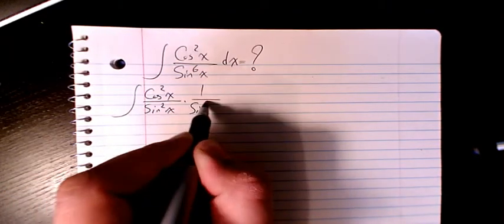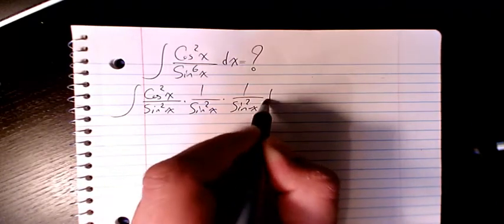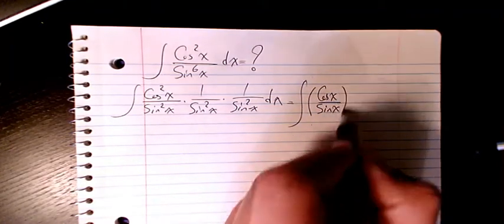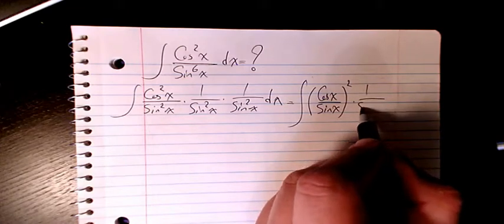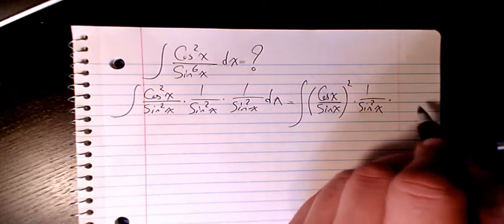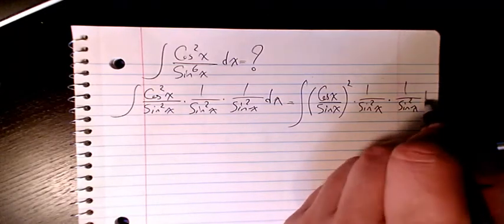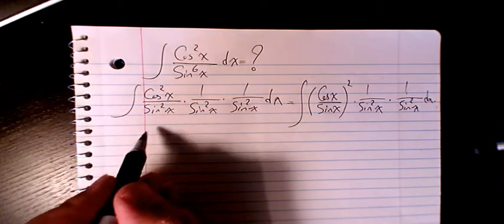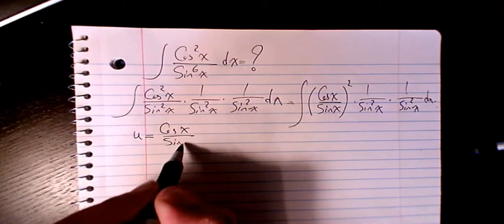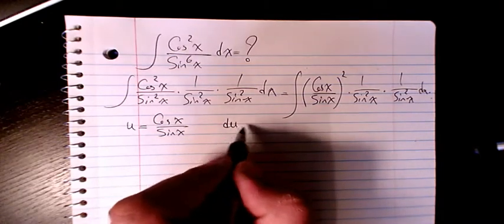...times one over sine squared x, times one over sine squared x dx. Then these two are combined: cosine divided by sine squared, times one over sine squared x, times one over sine squared x dx. You can consider u as cosine divided by sine, or cotangent.